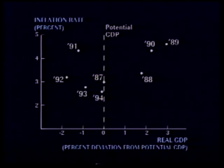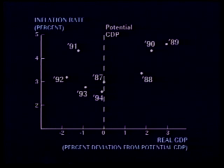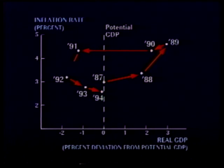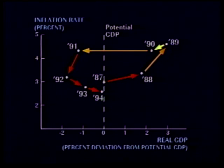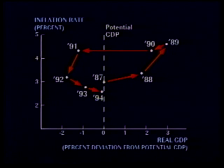Potential GDP is represented as a straight dashed line. Movement to the left represents recession, and movement to the right represents recovery. Upward movement represents higher inflation, and downward movement represents lower inflation. The cycle here takes the form of a loop in which real GDP begins and ends by being essentially equal to potential GDP.